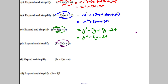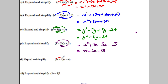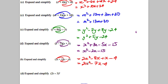Next: x² + 3x − 5x − 15 — combining 3x minus 5x gives negative 2x, so the result is x² − 2x − 15. Then: 2x² − 8x + x − 4 — combining negative 8x and positive x gives negative 7x, so that's 2x² − 7x − 4.